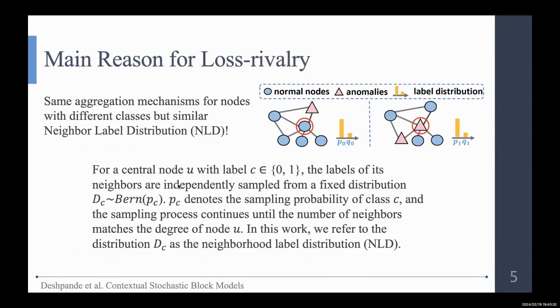And we think the main reason for loss rivalry is that we apply same aggregation mechanisms for nodes with different classes, but similar neighbor label distribution.